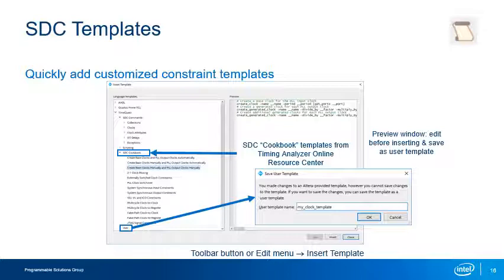Saved user templates can be accessed for other designs from the user category of the TimeQuest templates. Complete design templates are listed in the SDC Cookbook subcategory. The SDC Cookbook is an online PDF document that provides examples of SDC files for completely constraining a number of typical designs. To learn more about the SDC Cookbook, click the link or visit the Timing Analyzer Online Resource Center.